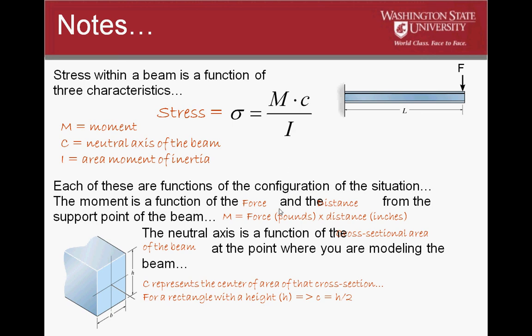The neutral axis, which is our C term, is a function of the cross-sectional area of the beam at the point where we're modeling the beam. If we have a rectangular cross-section, then our C value is going to be our height divided by 2. We're looking for the center line of our particular beam. If our beam is cattywampus and an odd shape, then you have to perform some calculations to figure out where the center line is of that particular beam.